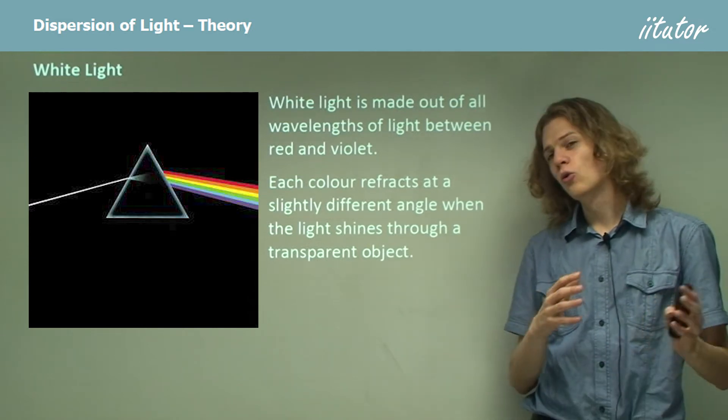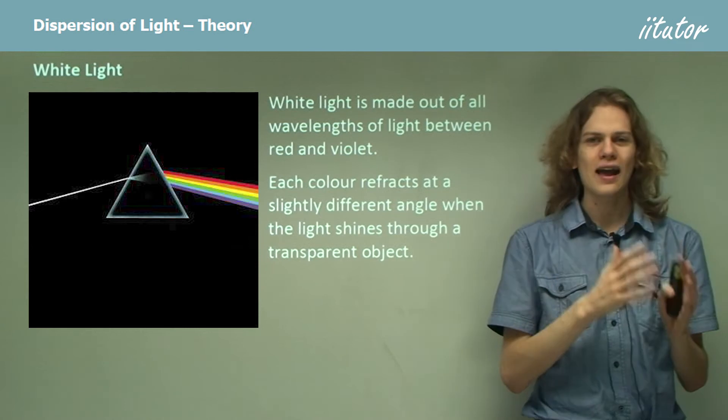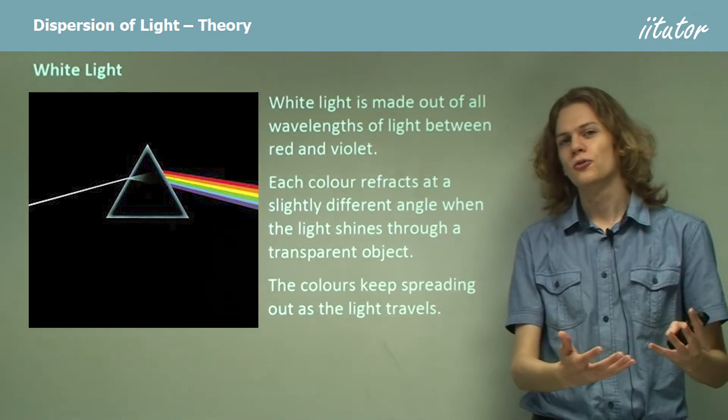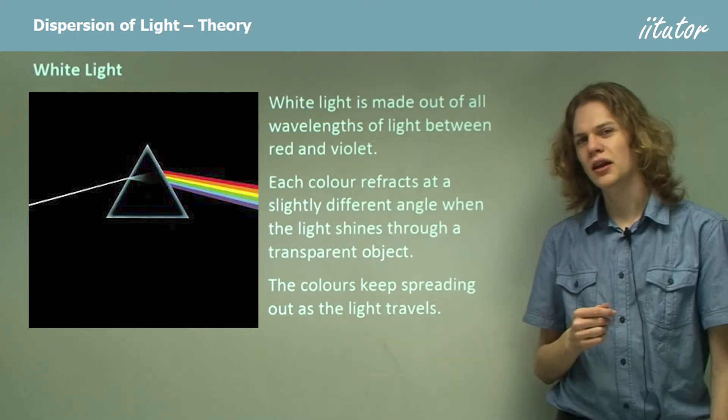So each color, because they all have slightly different wavelengths, will refract at a slightly different angle to every single other color. As we get further and further away from the source of refraction, the colors will keep spreading out. We can see that in this picture over here.